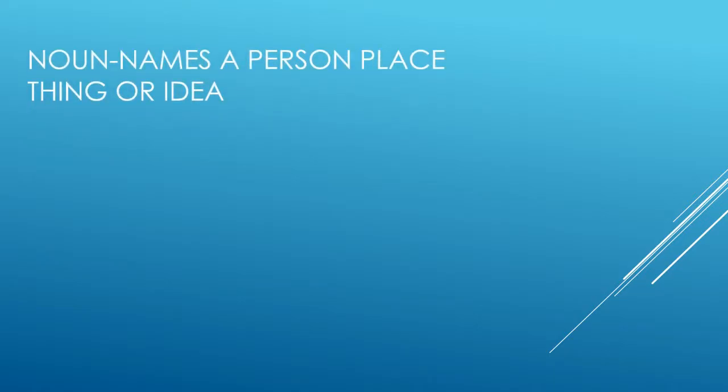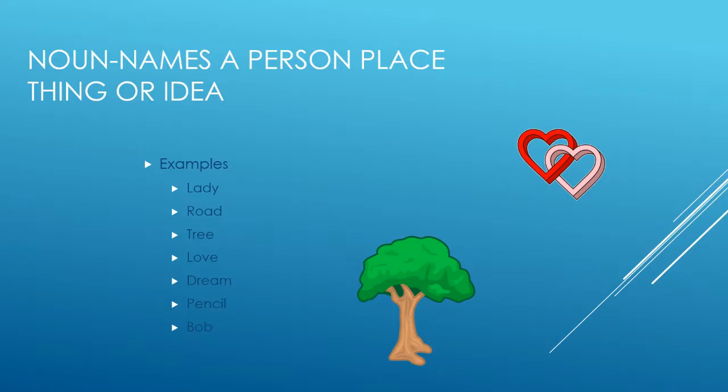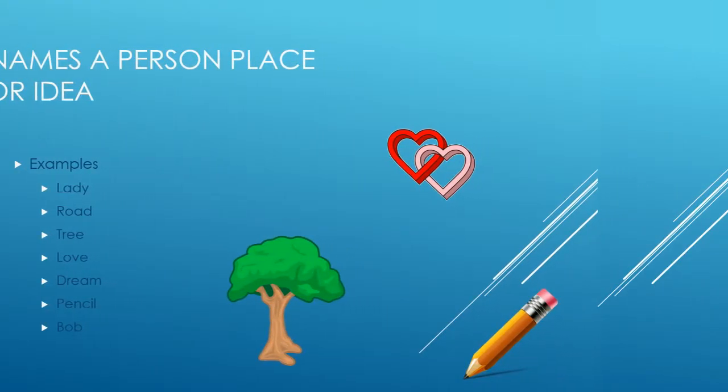Nouns name a person, place, thing, or idea. It functions as the name of some specific thing or set of things. Here in our examples we have lady, road, trees, love, dream, pencil, and bob.